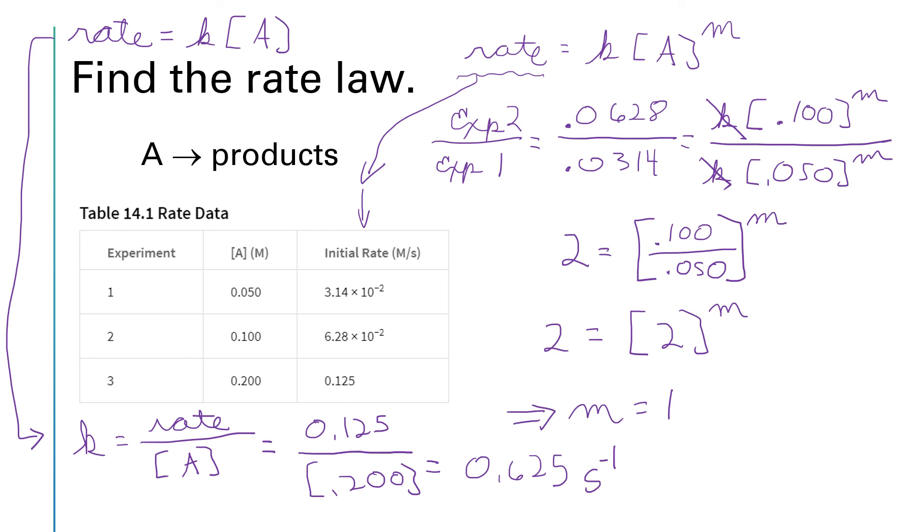So our full rate law, if we're going to write the whole thing out for our final answer, it would be that the rate is equal to k times the concentration of A raised to the first power, and k is equal to 0.625 per second.